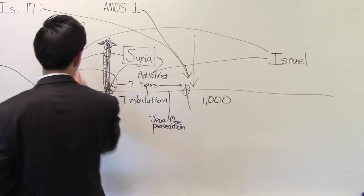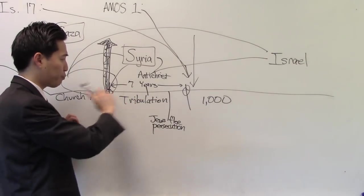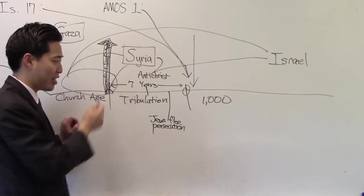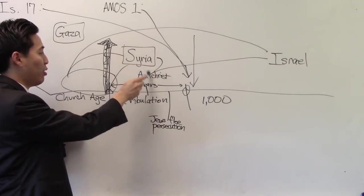Thus saith the Lord for three transgressions of Gaza and for four I will not turn away the punishment thereof because they carried away captives of the whole captivity to deliver them up to Edom. But I will send a fire on the wall of Gaza which shall devour the palaces thereof. And I will cut off the inhabitant from Ashdod and him that holdeth the scepter from Ashkelon. And I will turn my hand against Ekron and the remnant of the Philistine shall perish saith the Lord God. Build up the wall in Gaza. Pay back against the Jews. You can reclaim it. Get back that temple mount. Because why? He's a Syrian the Antichrist.